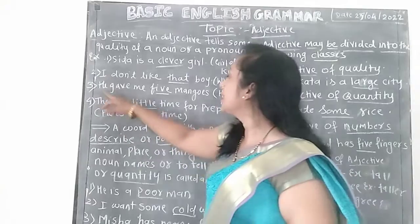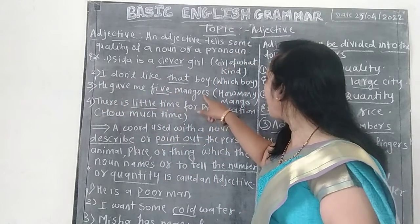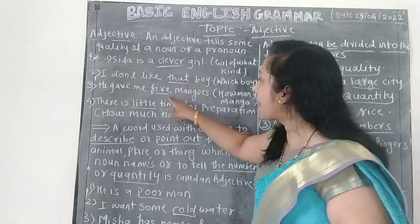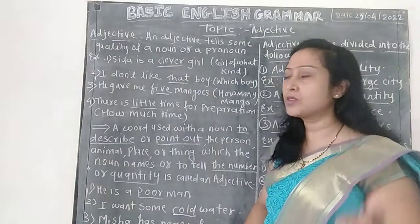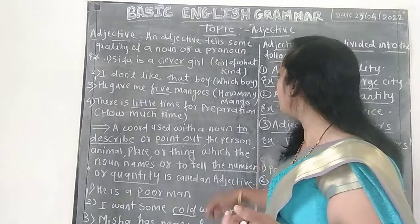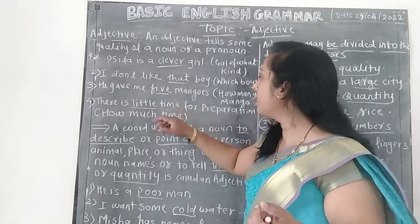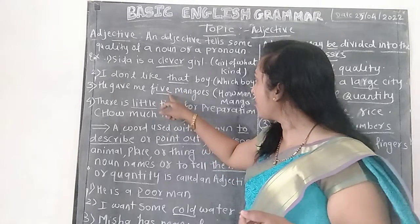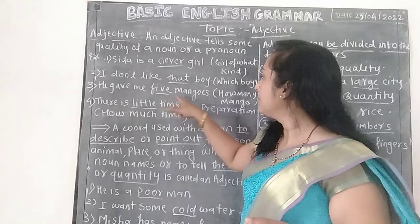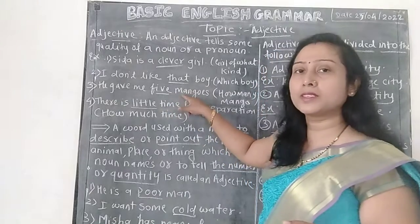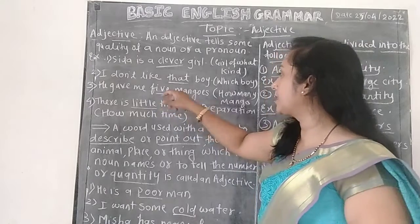He gave me five mangoes. How many mangoes? Five mangoes. The number five gives information about the mangoes — how many mangoes? Five. So 'five' is the adjective in this sentence, giving information about the noun 'mangoes.'